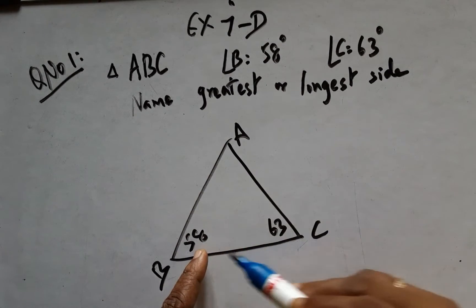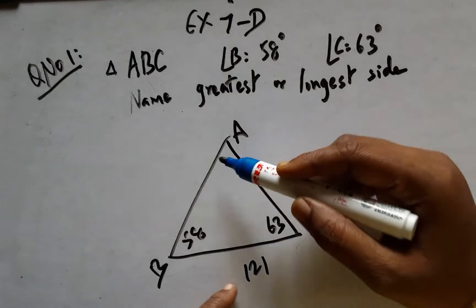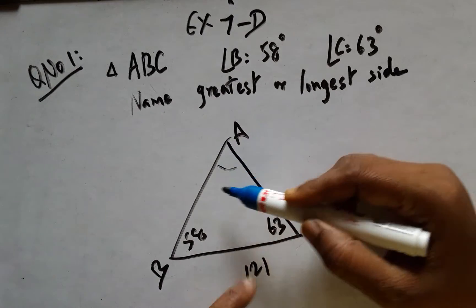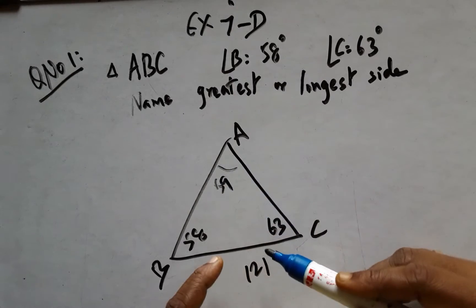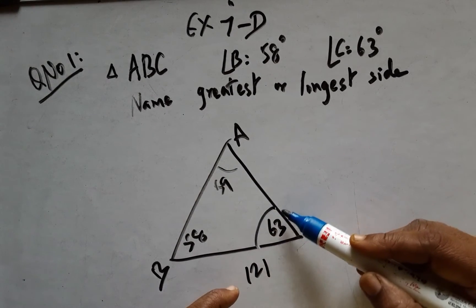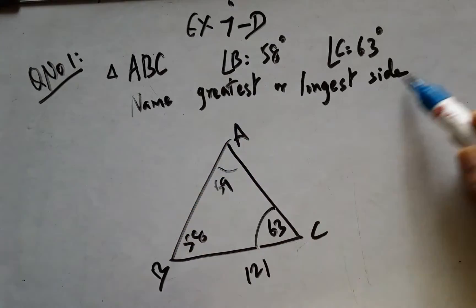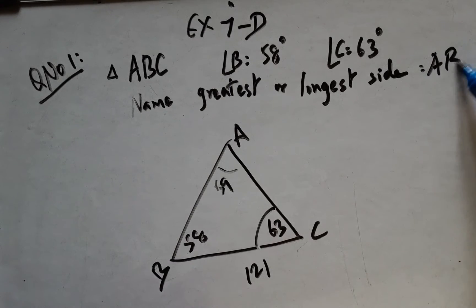By angle sum property, we see that the third angle is 59 degrees. So this is the biggest angle, the largest angle. The side opposite to the largest angle will be the longest side. So AB is the longest side.